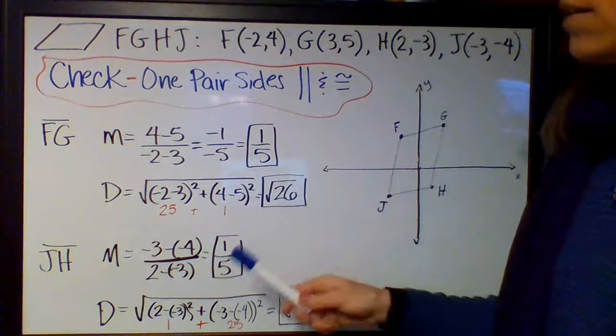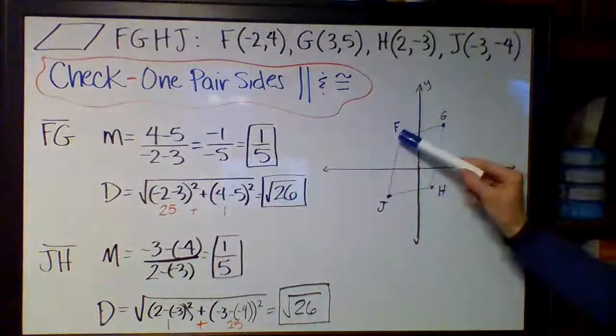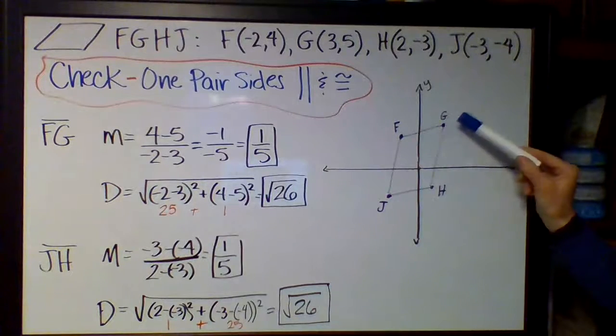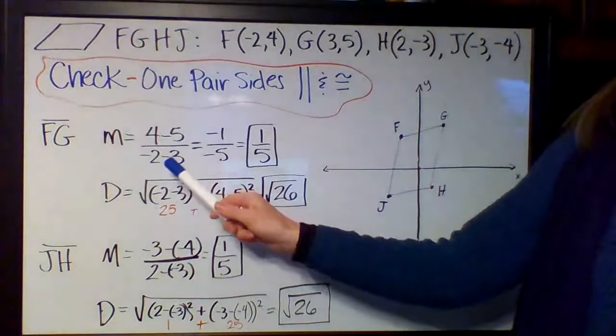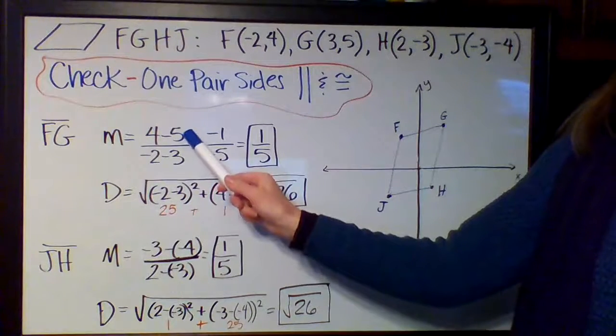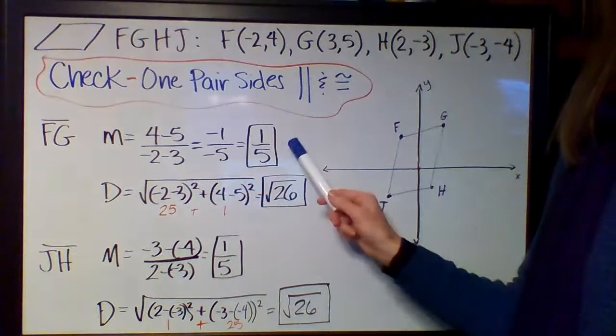So here's the work that I did. I started with FG, sort of this top side right here, and I calculated its slope. I used the slope formula, the difference in the y's over the difference in the x's, and I got 1 fifth.